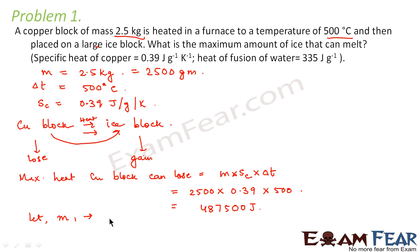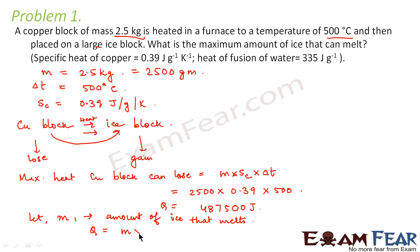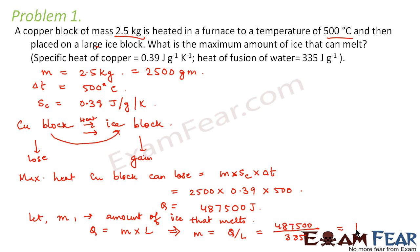Let us suppose m1 is the amount of ice that melts when the copper block is placed on it. If this heat is Q, then we can say Q is equal to mass into latent heat, where the latent heat is the latent heat of fusion. So m will be equal to Q divided by L, which is 487,500 divided by 335.